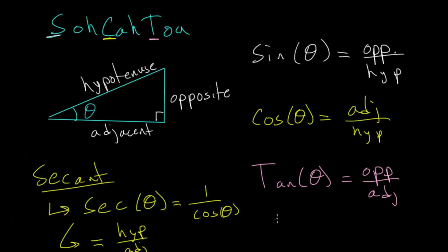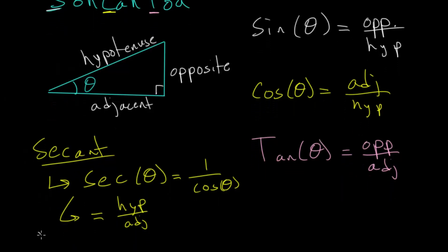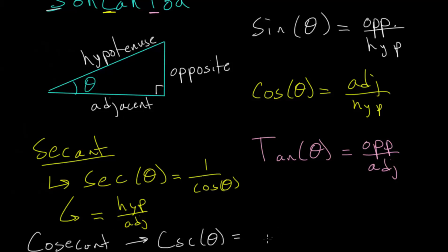The next one is what we call the cosecant. The cosecant is related to the sine function, and we write that as CSC of our angle theta. That equals one divided by the sine of angle theta. Since sine is opposite over hypotenuse, the cosecant is this flipped over — it's the hypotenuse divided by the opposite side.